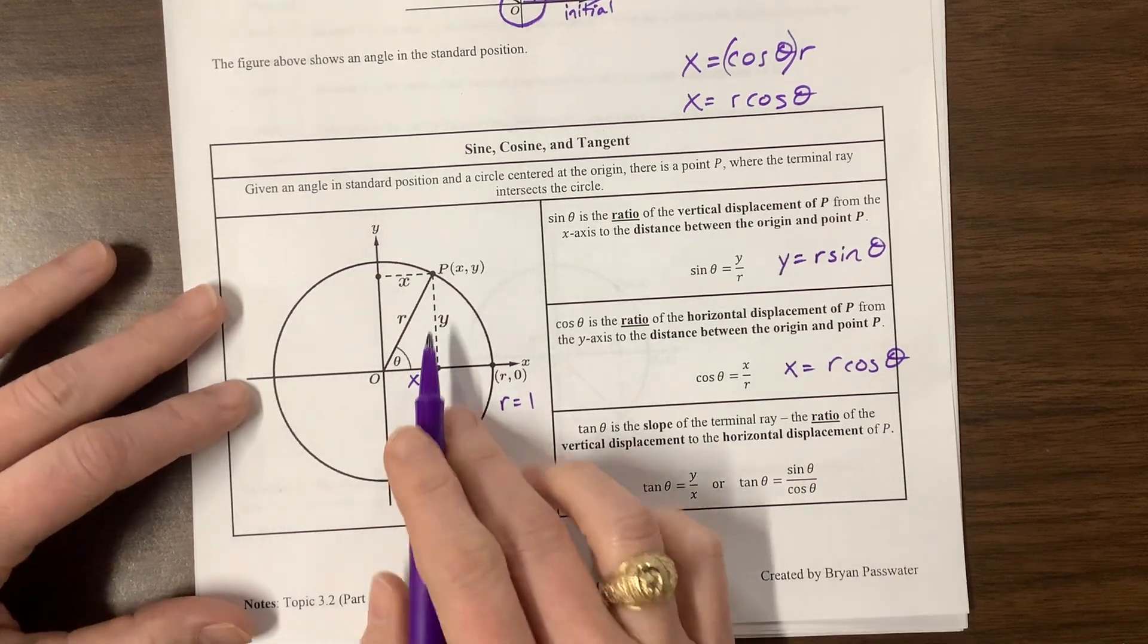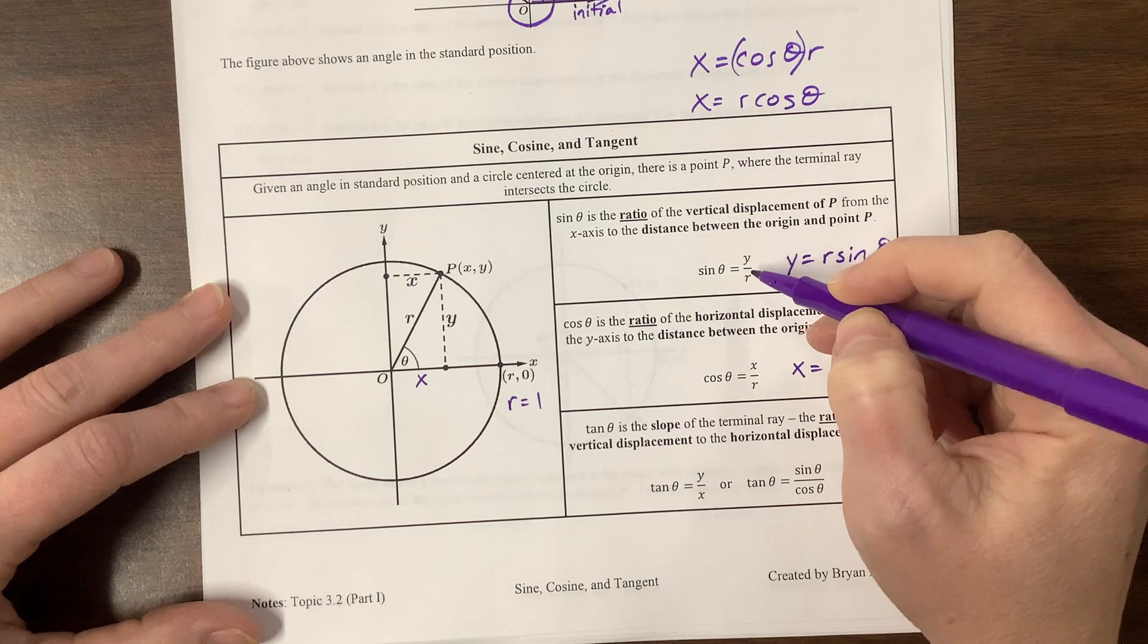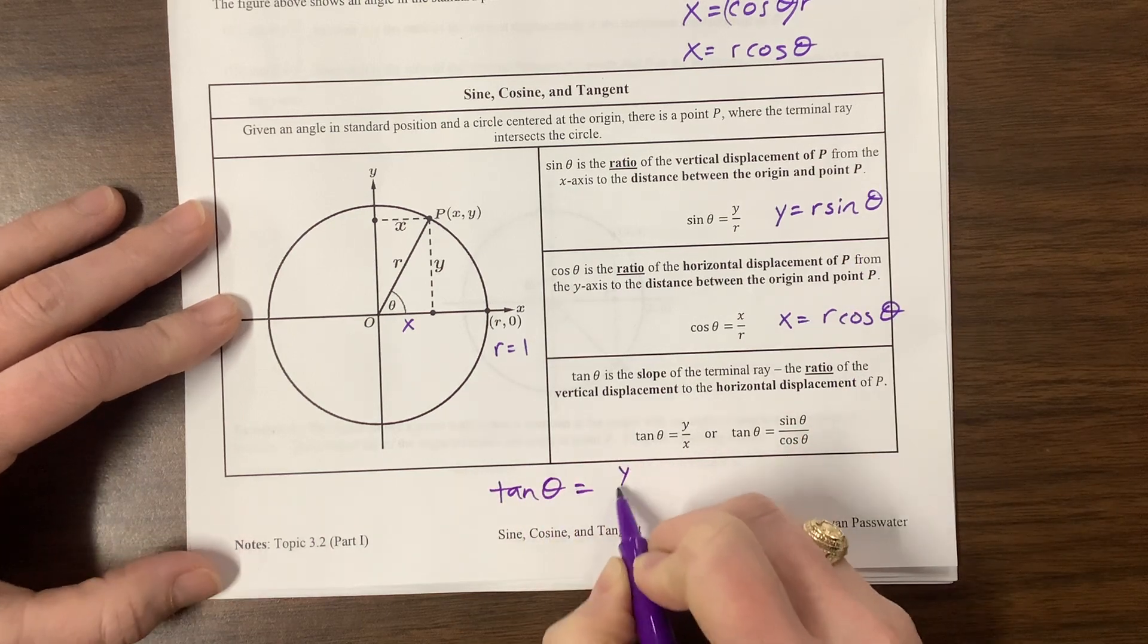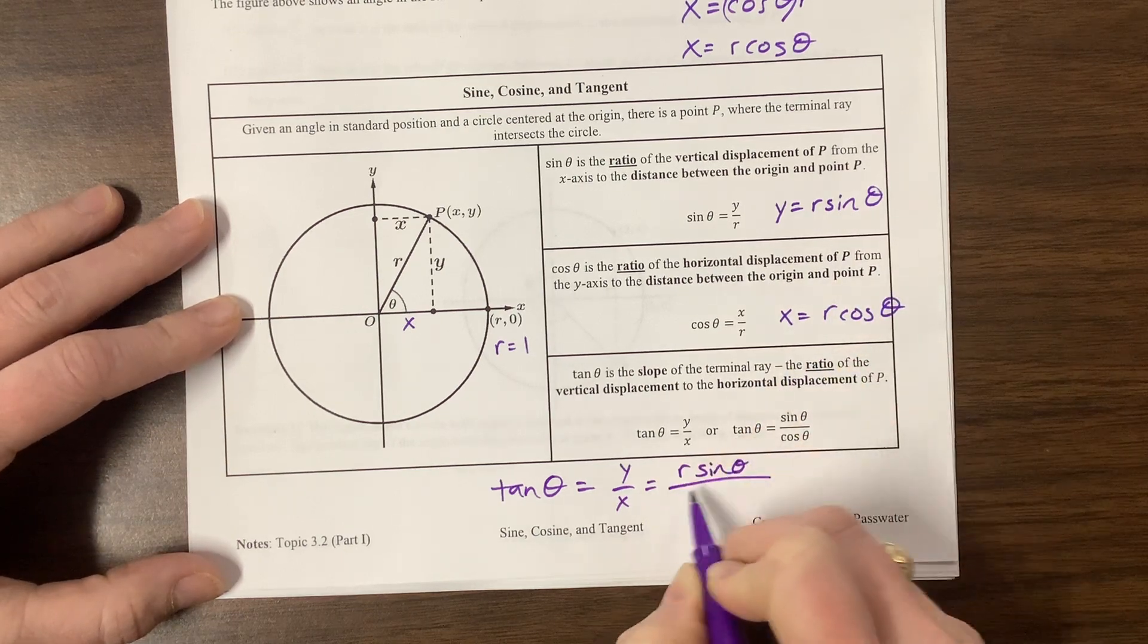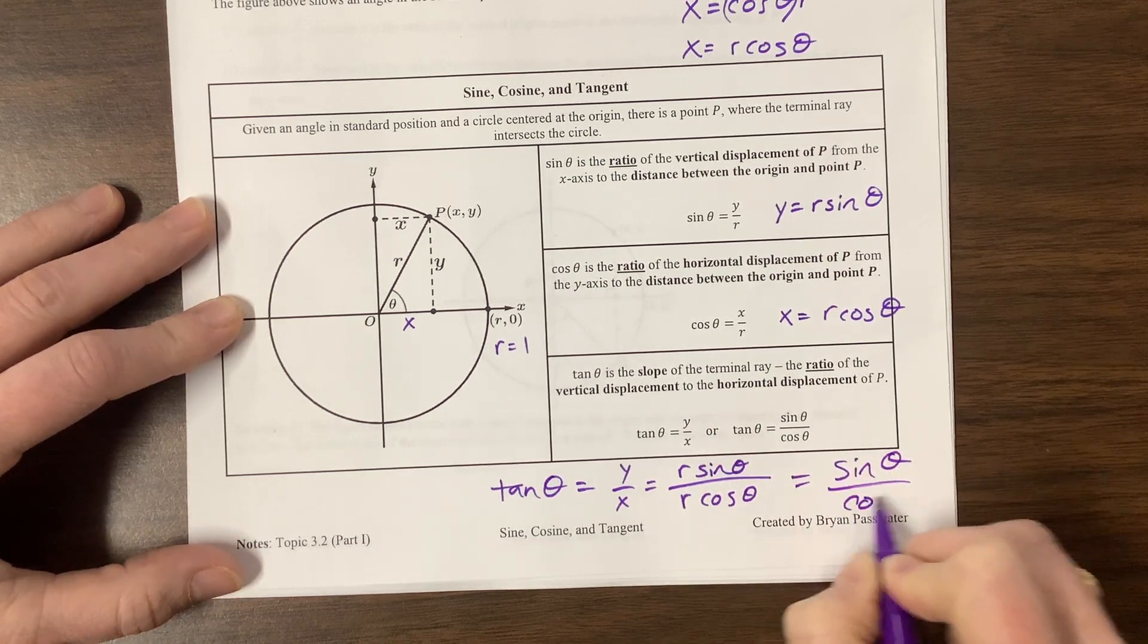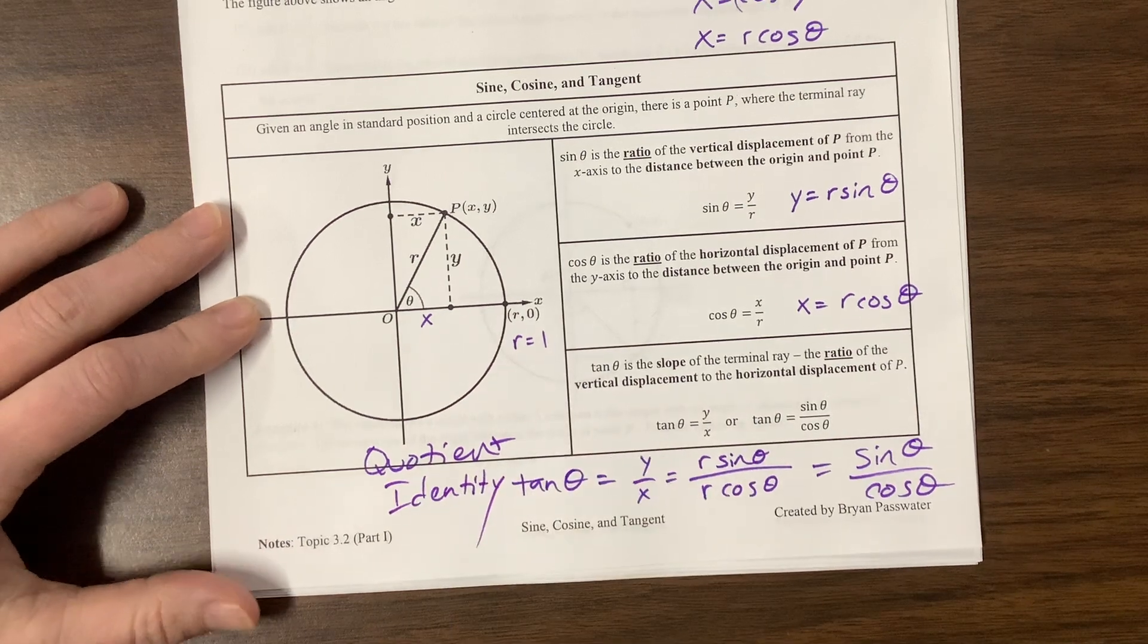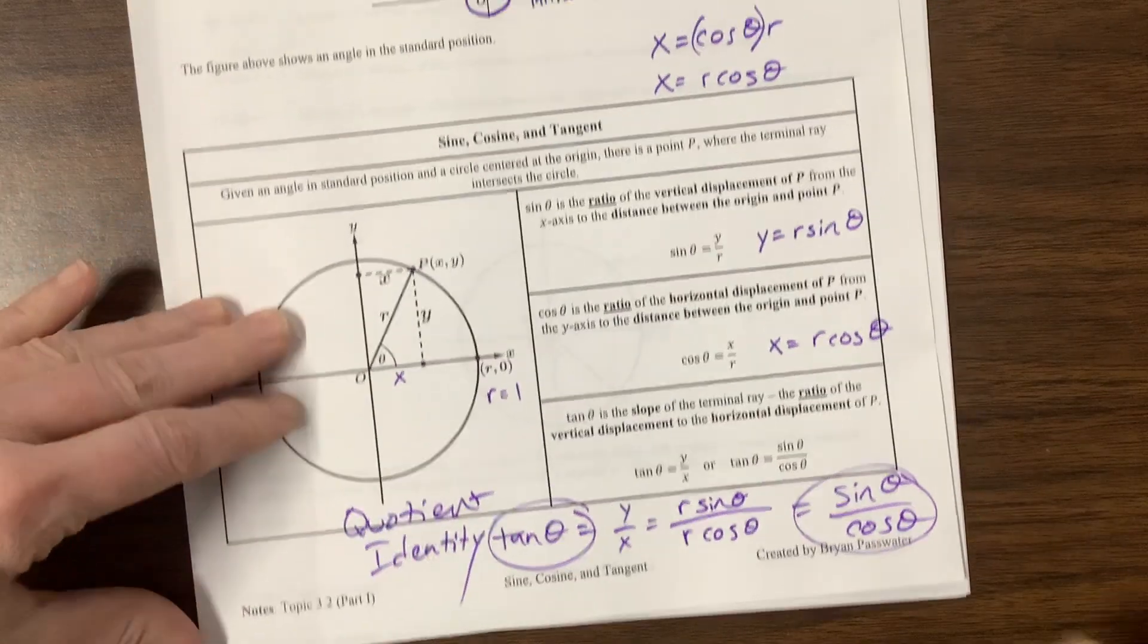Remember that when r is 1, then the y value is just sine, and the x value is just cosine of theta. The other thing to remember is, if I take y is equal to r sine theta, and we're saying here, tangent of theta is equal to y over x. We just said y was r sine theta, and then we just said x was r cosine theta. My r's can cancel, and so that is sine of theta over cosine theta. This is what we refer to as a quotient identity, and I love trig identities, so that's coming. And by definition, this tangent of theta equals sine over cosine is one of the two quotient identities.